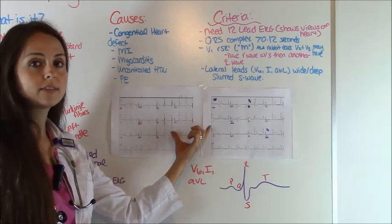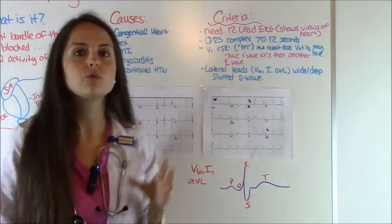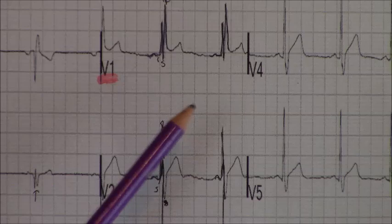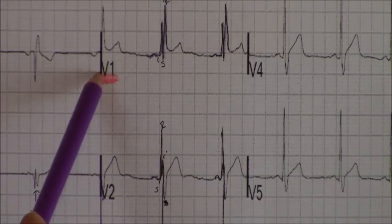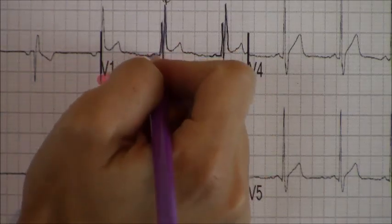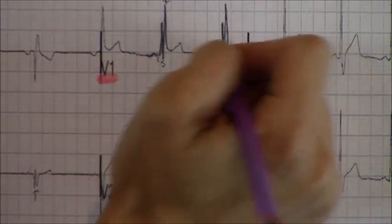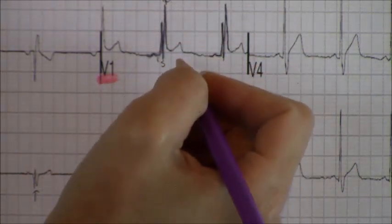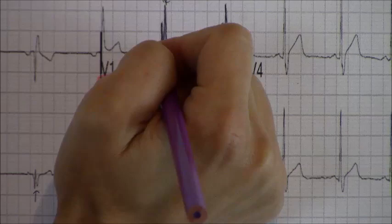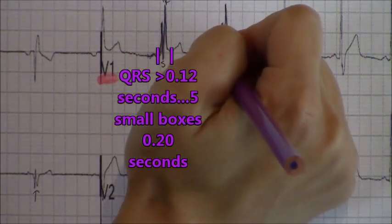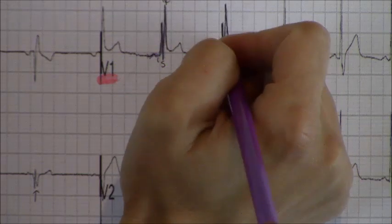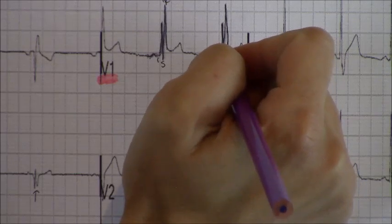Let's look together at these two EKGs showing a right bundle branch block and then compare to a normal EKG. So you get your EKG on a patient — the very first thing you want to do when suspecting a right bundle branch block is look at lead V1 and make sure it meets criteria. Remember: it needs to be sinus. We have our P waves right here — I've tried to outline them in purple. Then look at your QRS complex — it needs to be greater than 0.12 seconds. Our QRS complex starts right here and ends right there — that's definitely five boxes, so our QRS complex measurement is 0.20 seconds. That definitely qualifies.